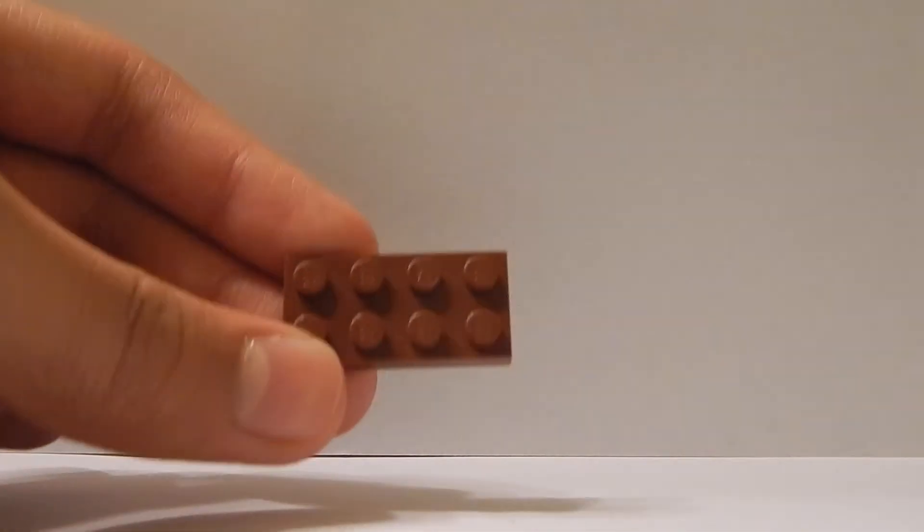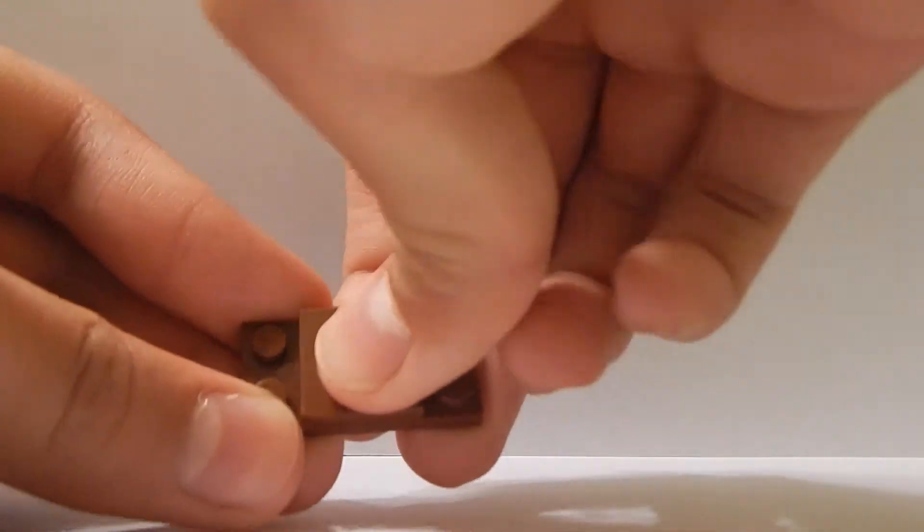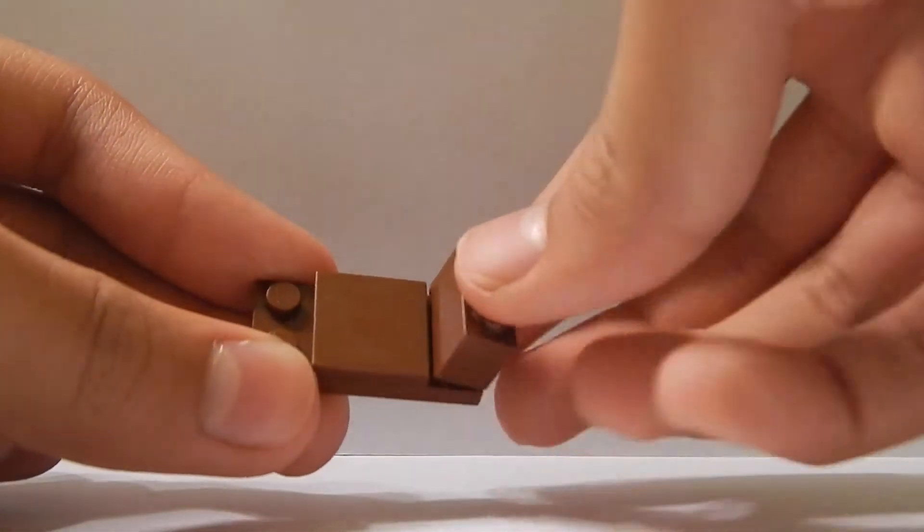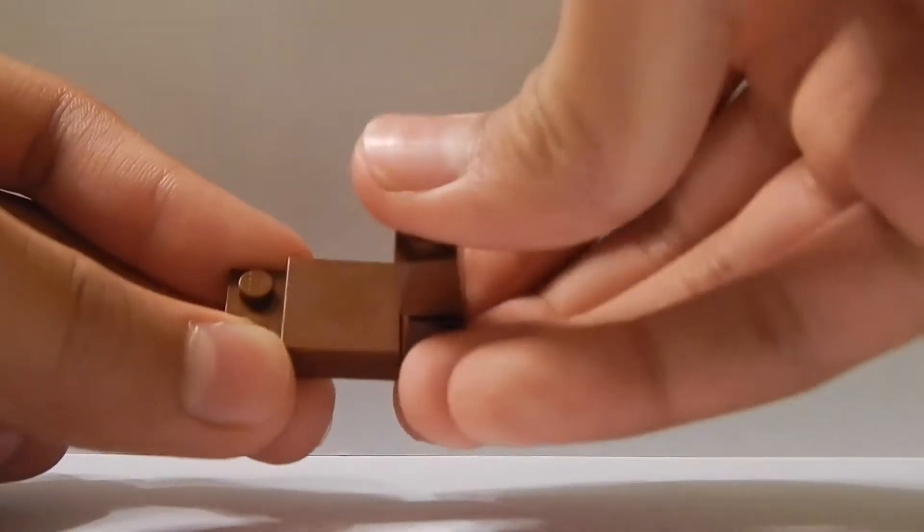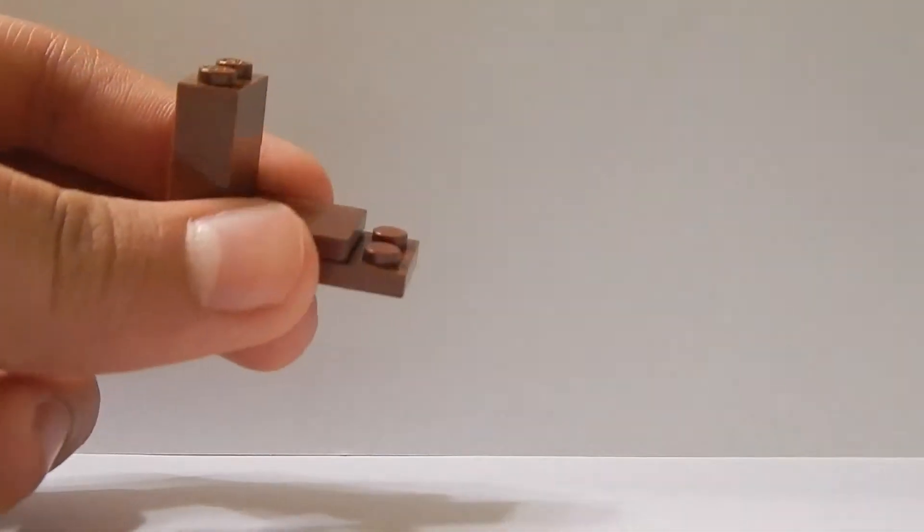To start off your bookcase frame, we're going to get a 2x4 plate and in the middle we're going to place a 2x2 tile. On the sides we're going to stack two 1x2 bricks, so it should look like that, and you're going to do the same on the other side as well.